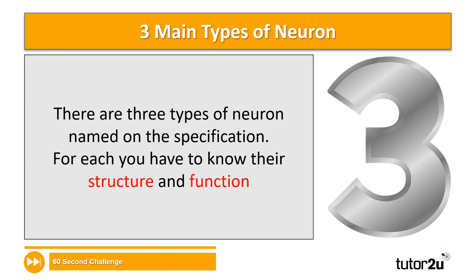Hopefully you remember in the last session we looked at the definition for structure and function related to neurons. We said that structure referred to essentially what it looked like — that's to say the different parts — and function of a neuron was all about what it does, that's to say what its role was.